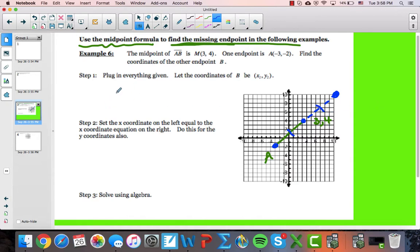We're going to plug everything in that we have to the formula. Now remember, the formula is x₁ plus x₂ over 2 equals the midpoint. That's going to give me the x-coordinate. So let's do that. We have x₁. I'm going to call this one endpoint x₁, y₁.